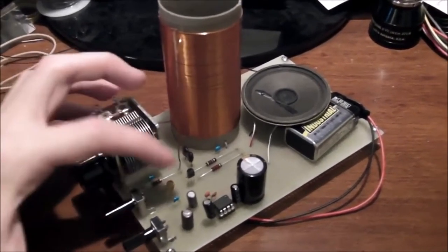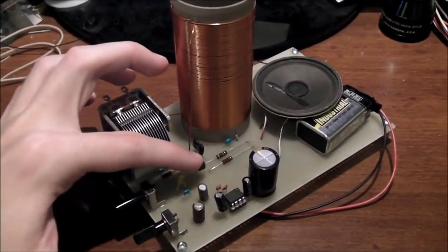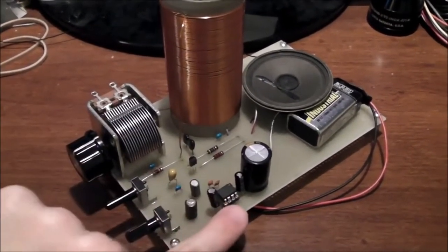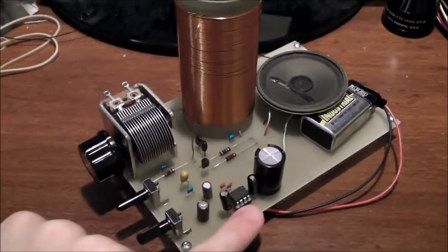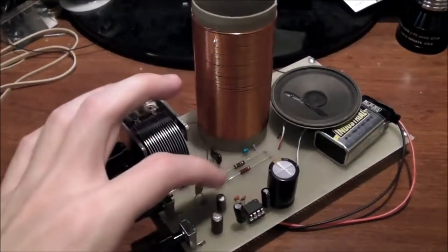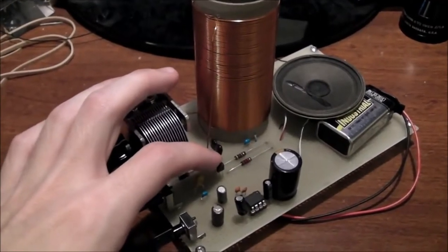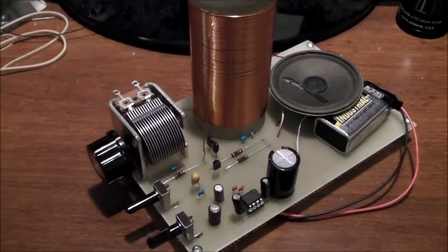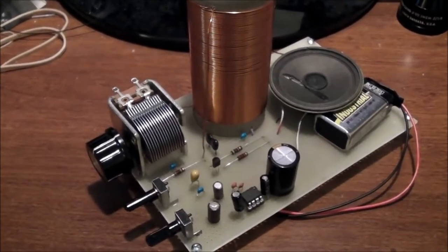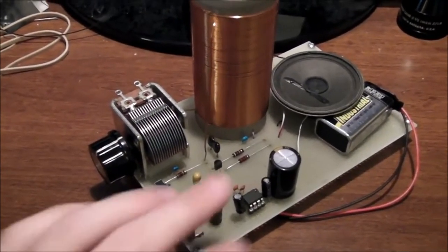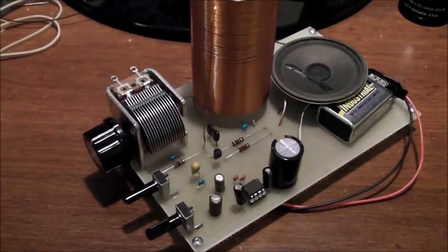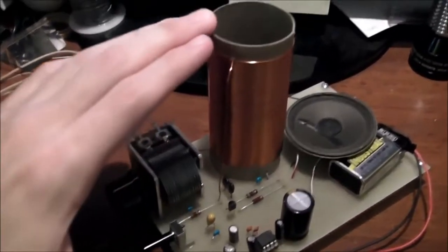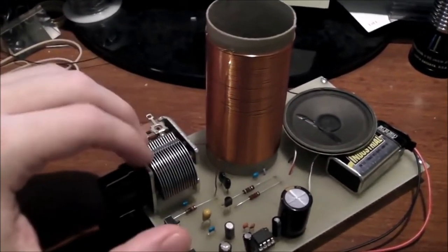So right here is the actual transistor, the one transistor that makes the radio receiver. Over here is an LM386 audio amp which just takes the very small amplitude signal that this one transistor produces when it receives the radio signal and amplifies it to something that we can actually hear on a speaker. The whole thing runs off of one nine volt battery. I've got a hand wound coil here and a tuning capacitor.